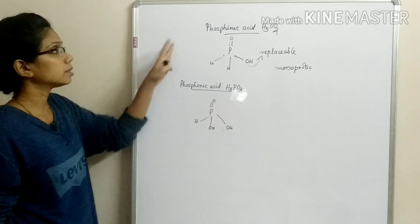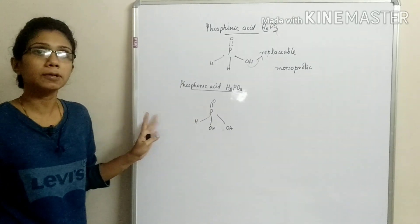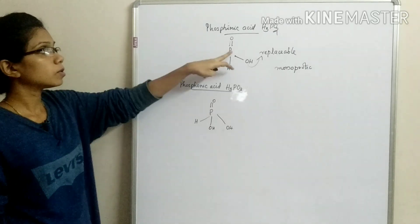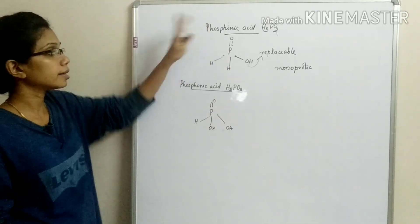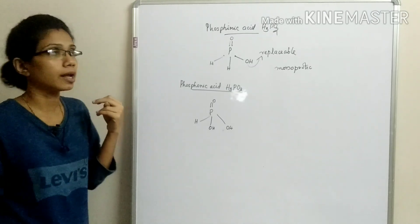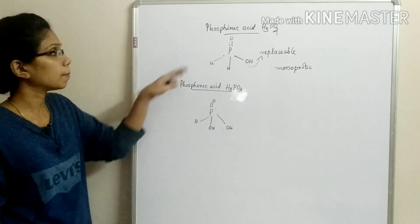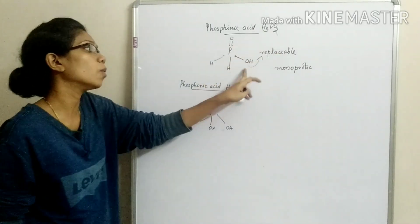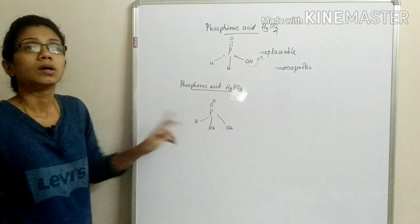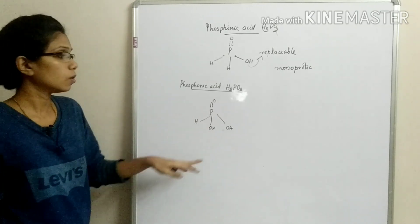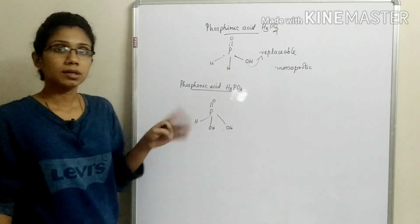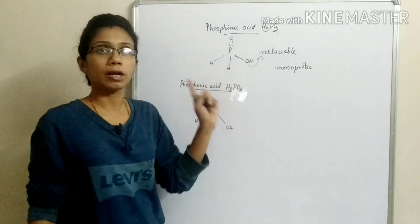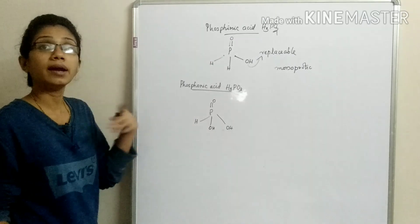If you want to study this structure carefully — phosphorus has 5 electrons in its outer shell. With a double bond O, and OH groups attached, if you have one OH and then another OH, that gives you 2 replaceable hydrogens.